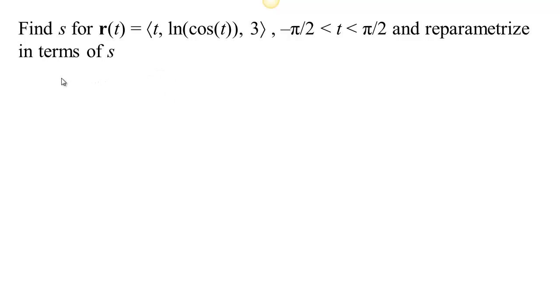Here's a problem that asks us to find the arc length parameter s for a given parametric curve. Now remember, the arc length parameter s is the integral from your starting time up until the current time of the speed, written in terms of a dummy variable and d dummy variable.